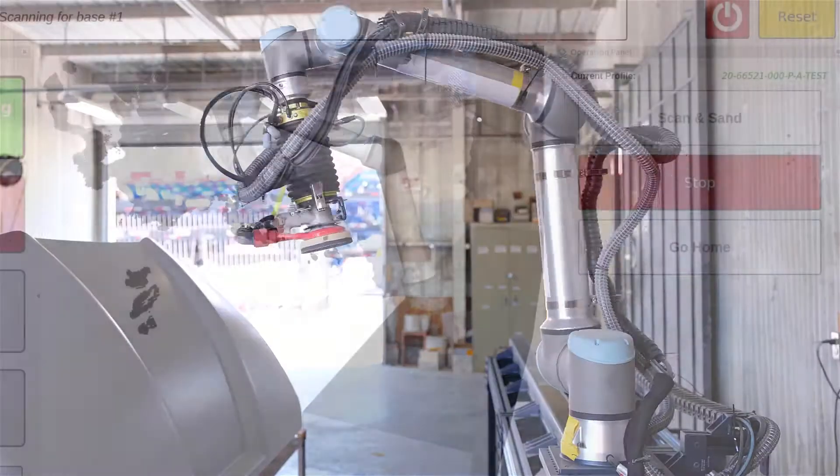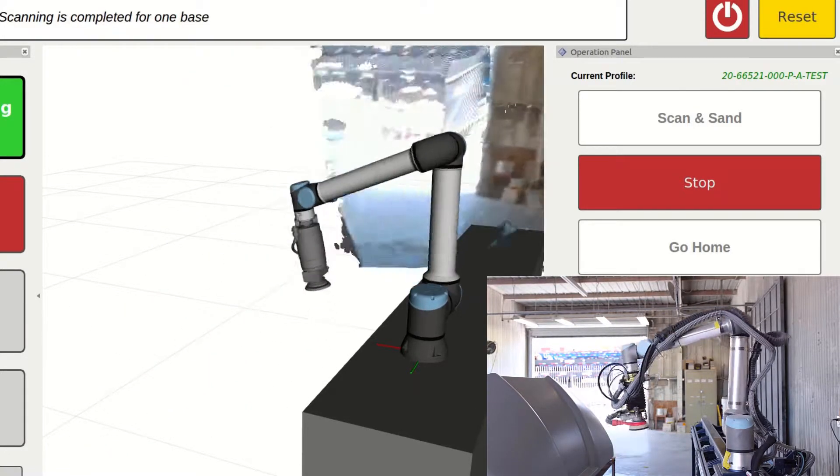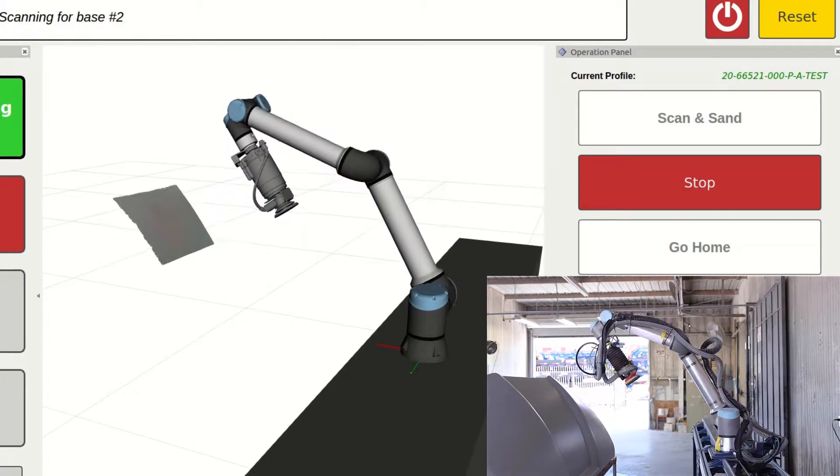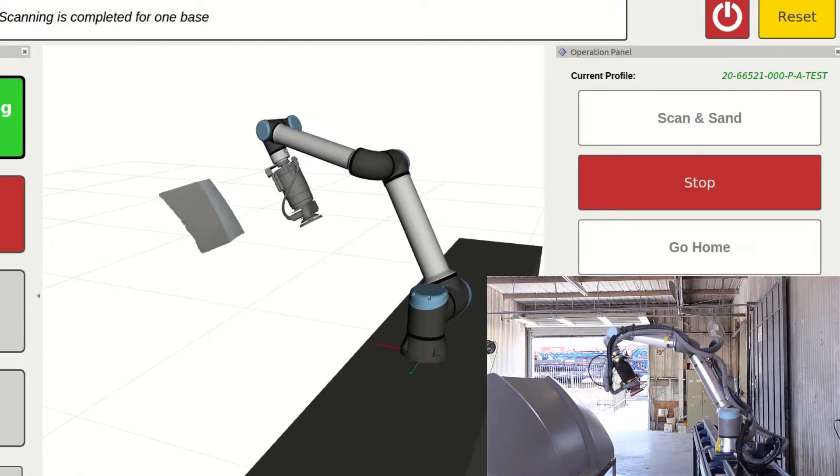Gray Matter's artificial intelligence technology allows the robot to automatically program itself. It does not require any expert programmer to program the robot.